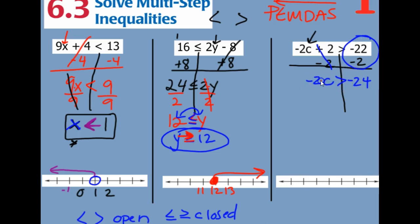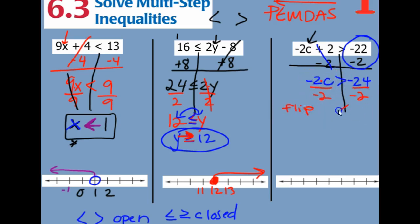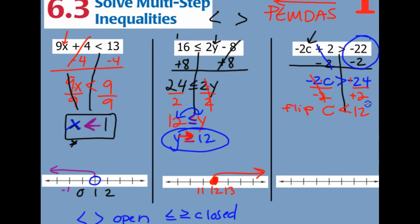The opposite of multiplying by negative 2 is dividing by negative 2. Be careful, though — when you divide or multiply by a negative, you have to flip the inequality symbol the other direction. So again, two negatives make a positive, and 24 divided by 2 — just like the last one — gives us 12.